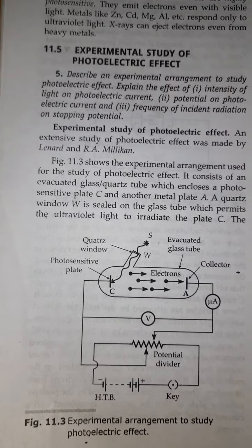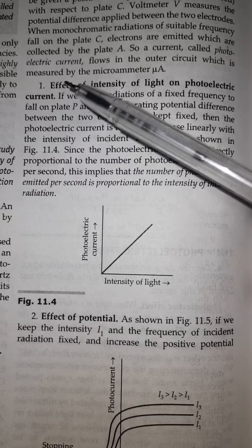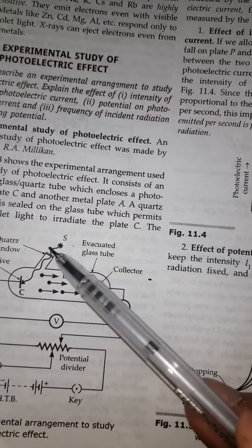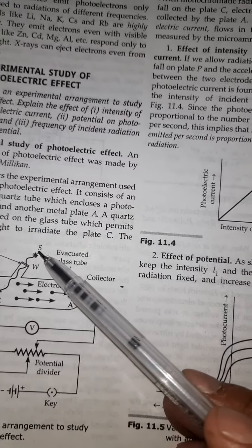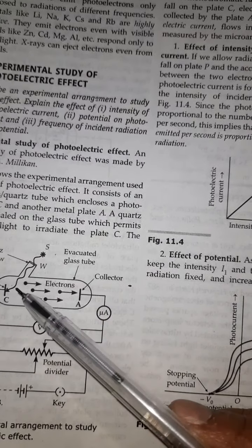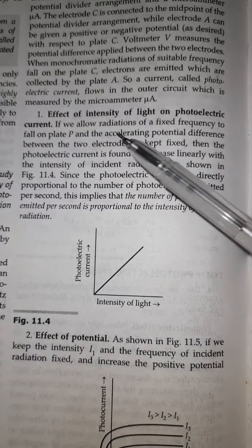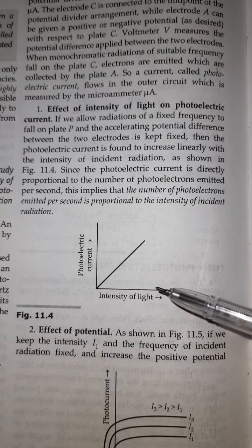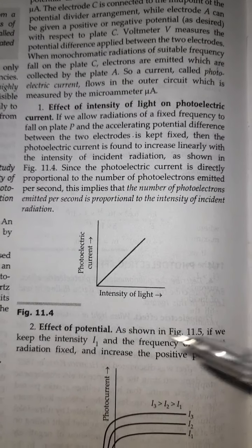There are four conclusions we will study here, using graphs. First: the effect of intensity of light on photoelectric current — how the current changes if intensity changes. Higher intensity means more photons falling on the cathode. More photons means more electrons emitted, and more electrons flowing means more current. So if intensity of light is higher, meaning more photons, the photoelectric current will be higher.